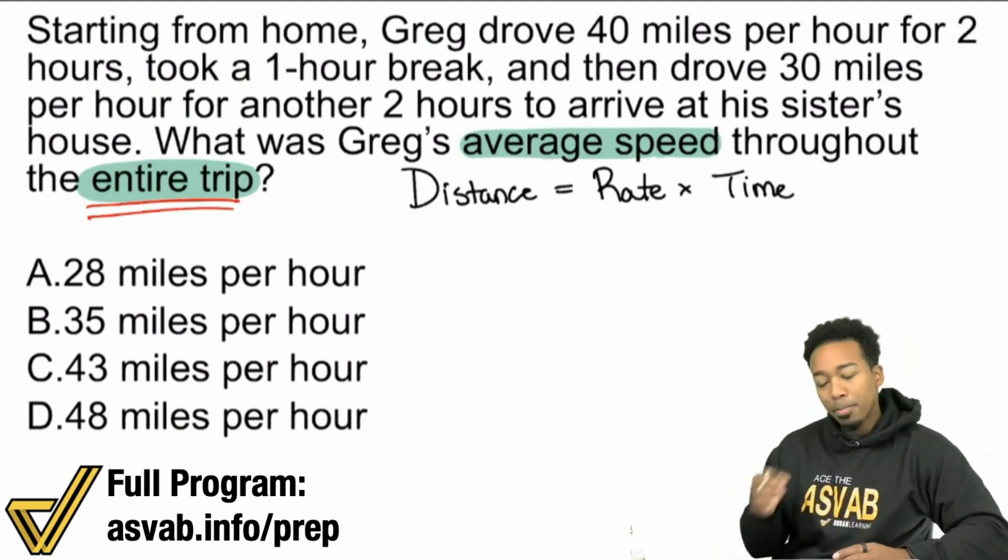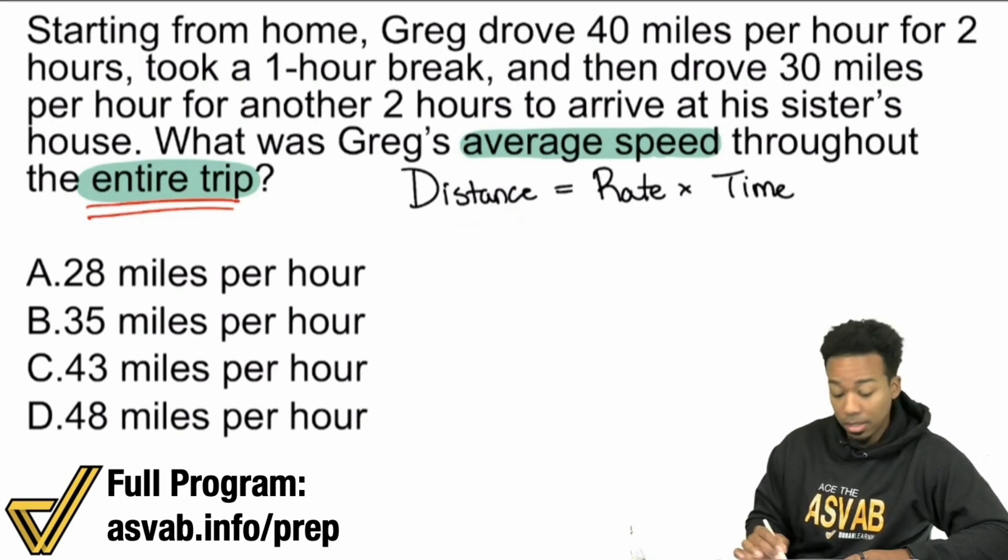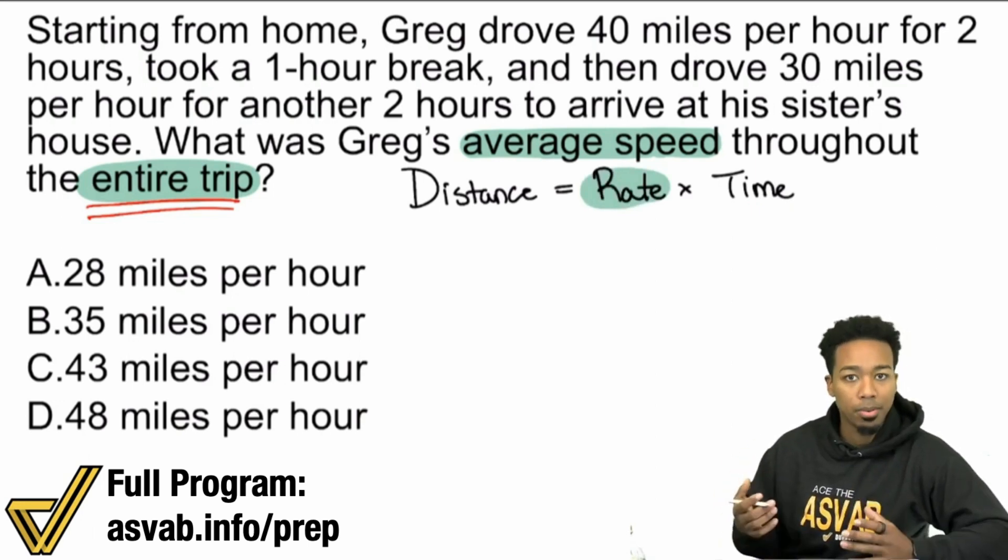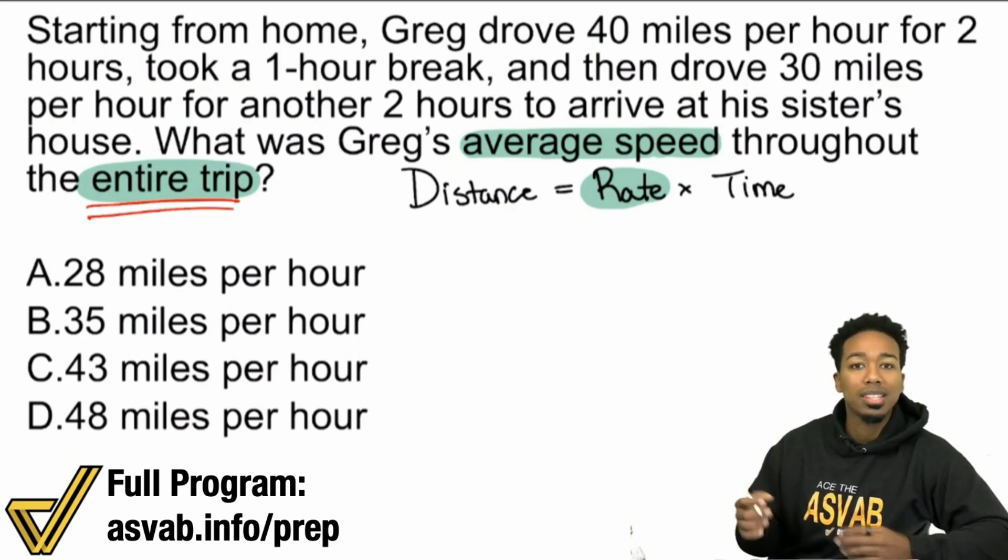We all know that in some way, shape or form. But here's where it's super important. If we're asking for the average speed for the entire trip, then that means that the distance that we need to plug in and the time we need to plug in to find the rate - because average speed is rate - what we're going to plug in needs to represent the same thing.